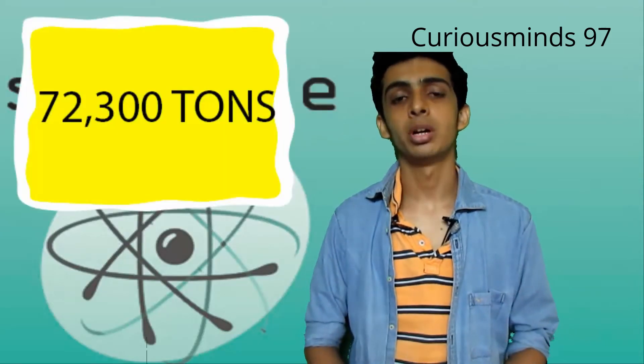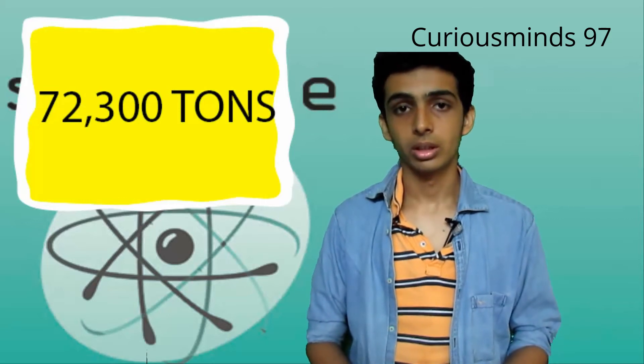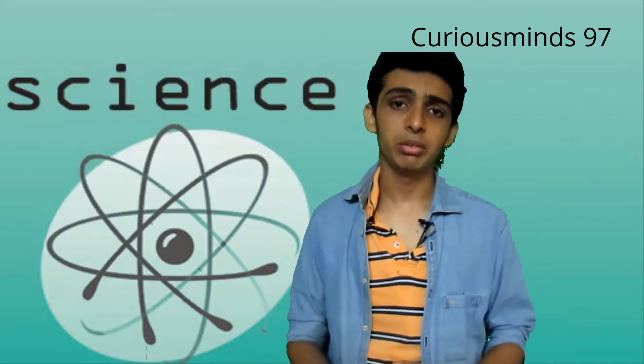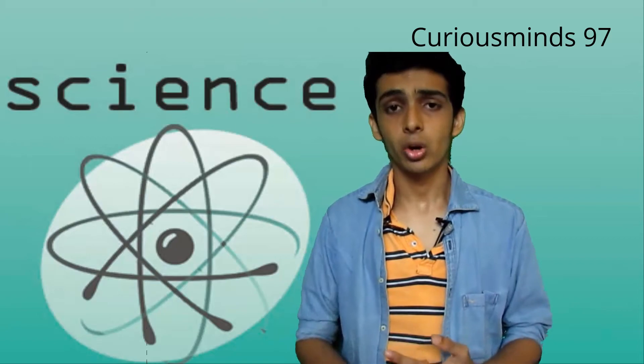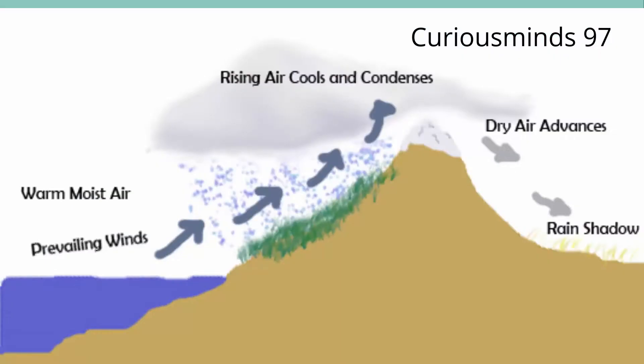Cloudburst can suddenly drop 72,300 tons of water. But this isn't that frequent as it happens due to orographic lifts when warmer air mixes with cool air and this causes sudden condensation.